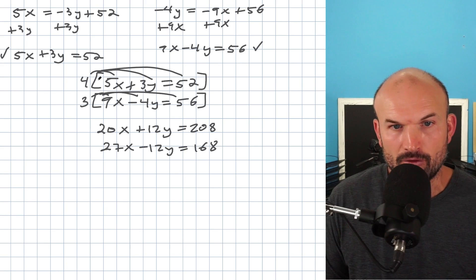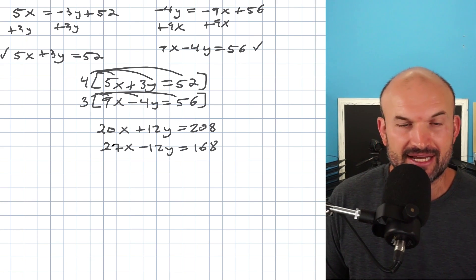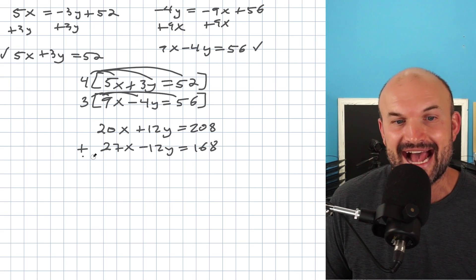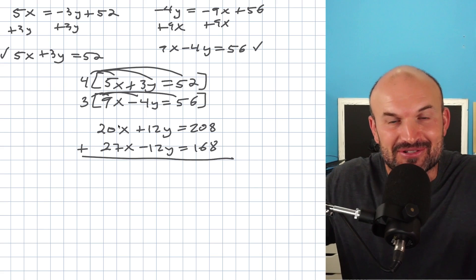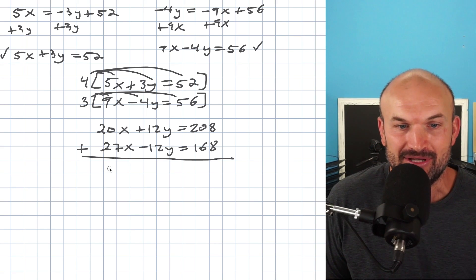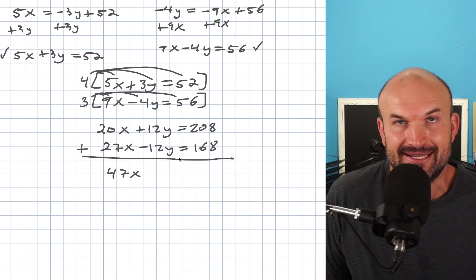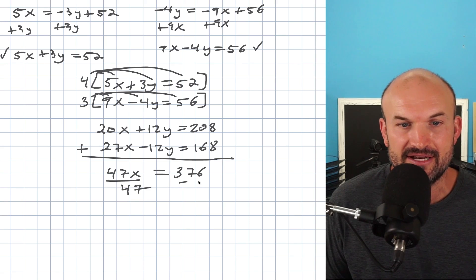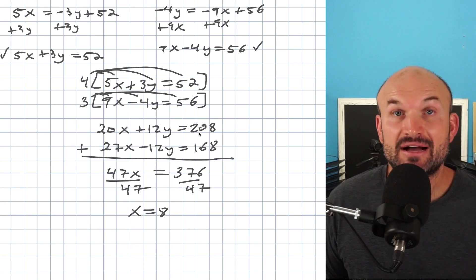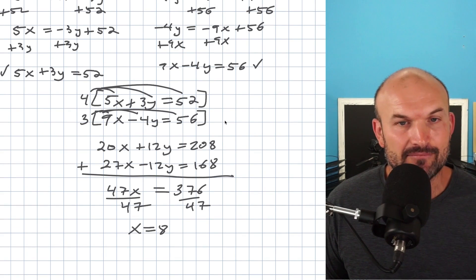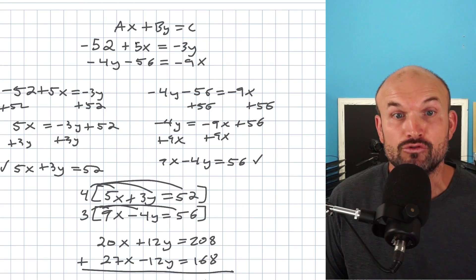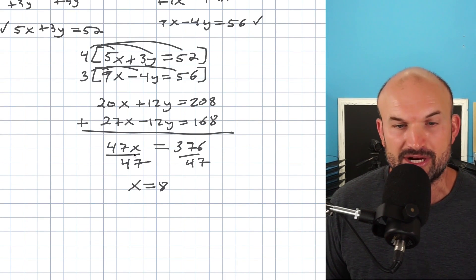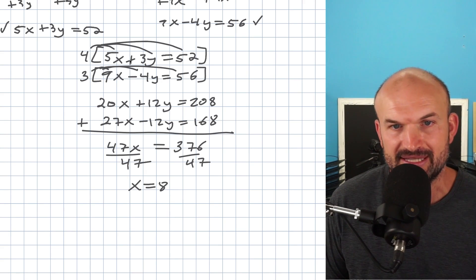Multiplying by 4 gives 20x plus 12y equals 208. Multiplying by 3 gives 27x minus 12y equals 168. Notice my Y coefficients are positive 12 and negative 12 — perfect. Adding the two equations vertically: 47x plus zero y equals 376. Dividing by 47 on both sides gives x equals 8. Remember, I need to solve for y too, so I'll plug x into one of the equations. I have multiple equations to choose from — original or multiplied versions.